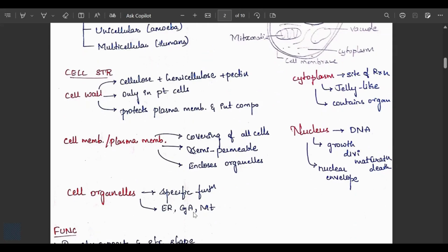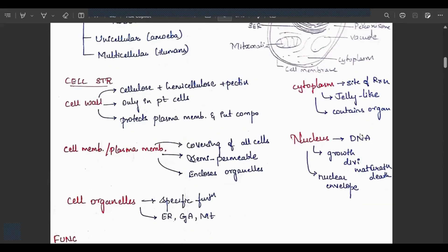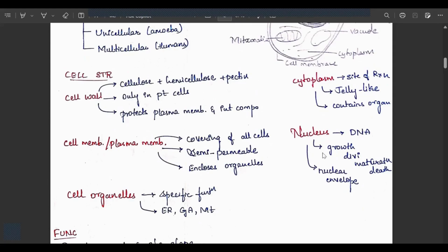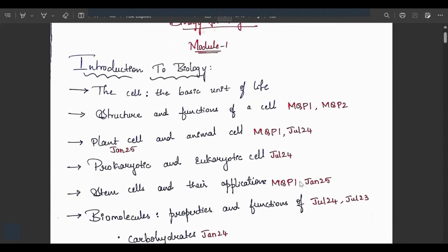Cell organelles and structure: endoplasmic reticulum can be rough and smooth, Golgi apparatus, mitochondria. Cytoplasm is the site of reactions, a jelly-like substance containing all organelles. Nucleus contains DNA and is responsible for growth, division, maturation and death of a cell, covered by nuclear envelope. This is what you have to answer if they ask about cell structure or cell organelles.